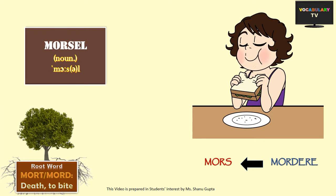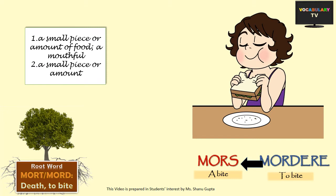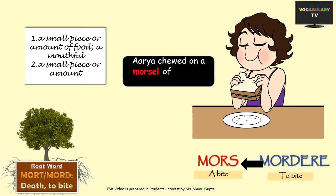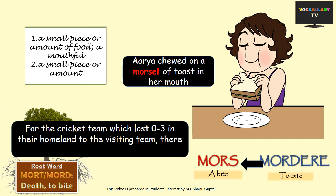Coming to the second root in this lesson: the Latin root 'mordere' means to bite, from which we derive the word 'morsel', which is a common one. A morsel of food means a small bite or amount of food — that is, a mouthful. For example, Arya chewed on a morsel of toast in her mouth. By extension, 'morsel' can also mean a small piece or amount of anything — like we can say that for the cricket team which lost 0-3 in their homeland to the visiting team, there wasn't even a morsel of consolation.